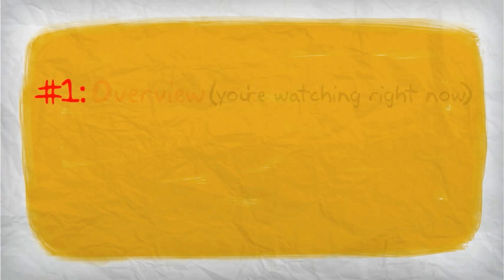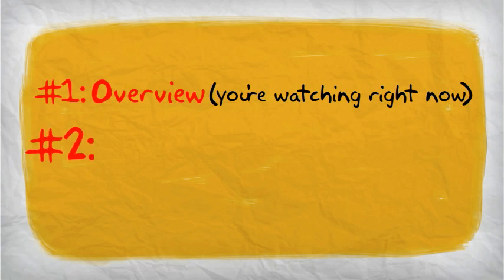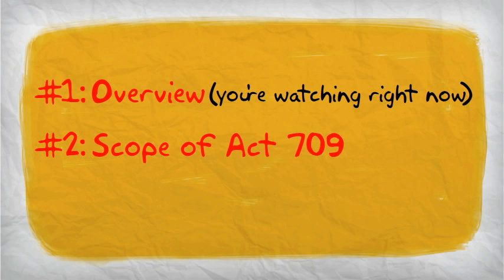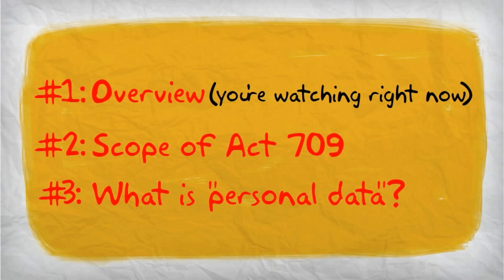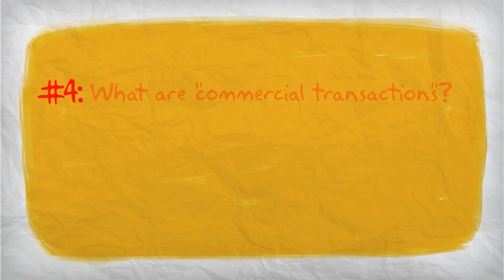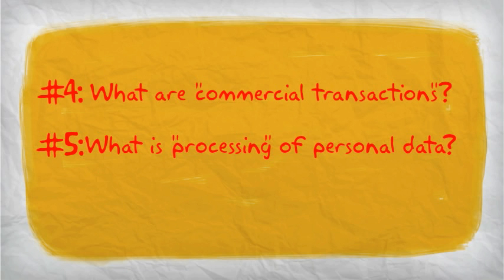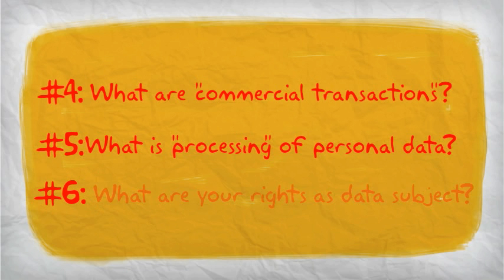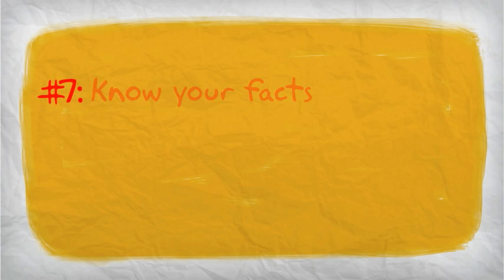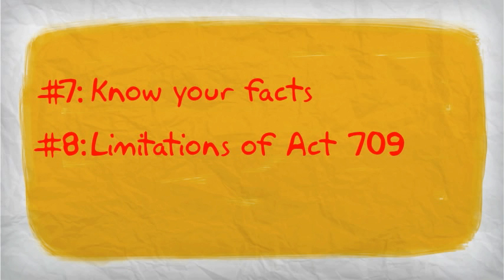The outline of this series of videos is: Video No. 1 Overview, Video No. 2 Scope of Act 709, Video No. 3 What is Personal Data?, Video No. 4 What are Commercial Transactions?, Video No. 5 What is Processing of Personal Data?, Video No. 6 What are your rights as data subject?, Video No. 7 Know your facts, Video No. 8 Limitations of Act 709.